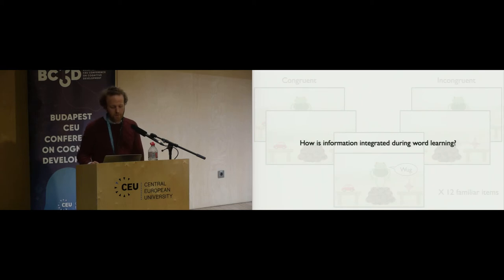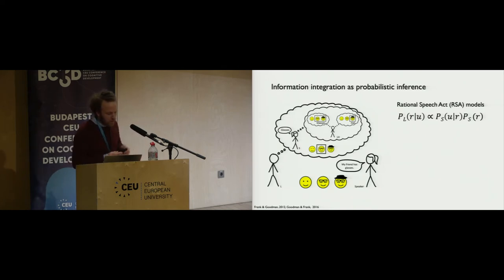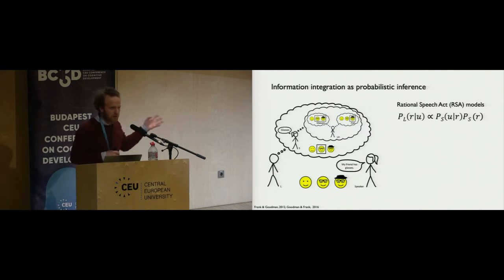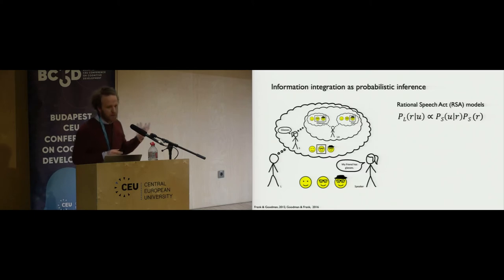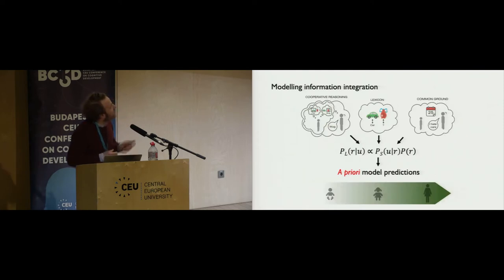In particular, we use the Rational Speech Act model. These models characterize pragmatic inference as a social inference, evident in their recursive structure: a listener reasons about a speaker who is in turn reasoning about a listener. Also built in is the assumption that speakers communicate informatively — they choose the best possible utterances given a referent and context — capturing the Gricean notion of cooperative communication. This model allows us to relate the different information sources we measured individually and generate a priori model predictions about how these sources should be integrated.